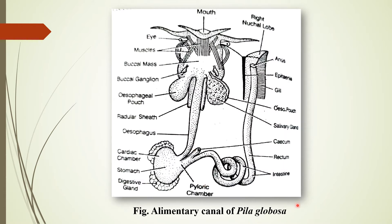This diagram shows the alimentary canal of Pila globosa. It consists of the foregut, which comprises the mouth, buccal mass, and esophagus. The midgut consists of the stomach and intestine, while the hindgut consists of the rectum and the anus. Let's now look at each part one by one.